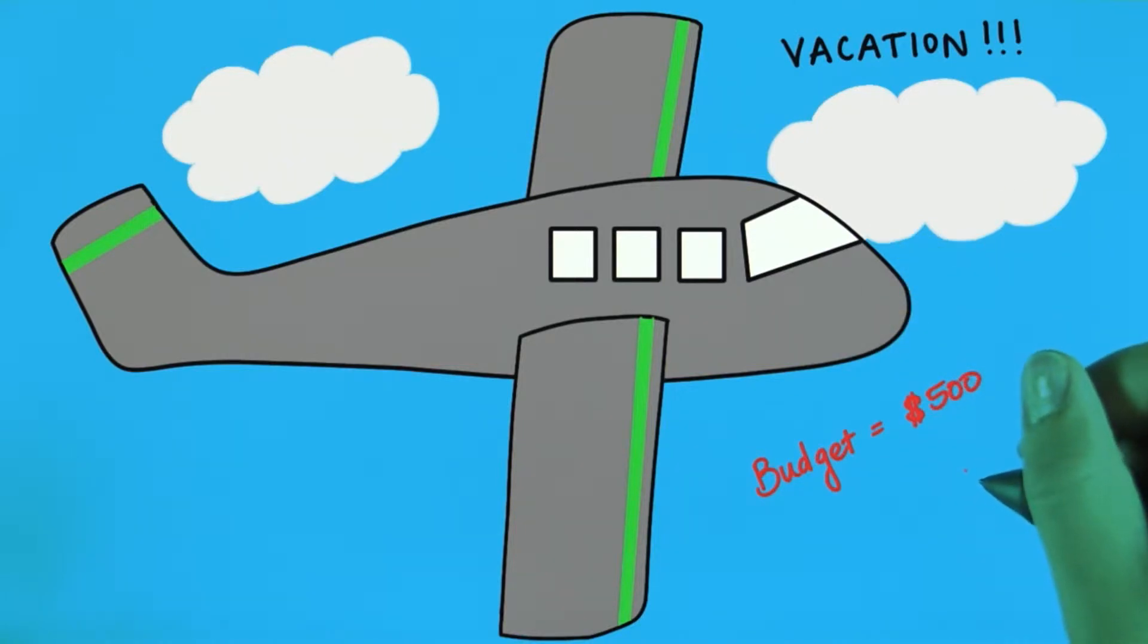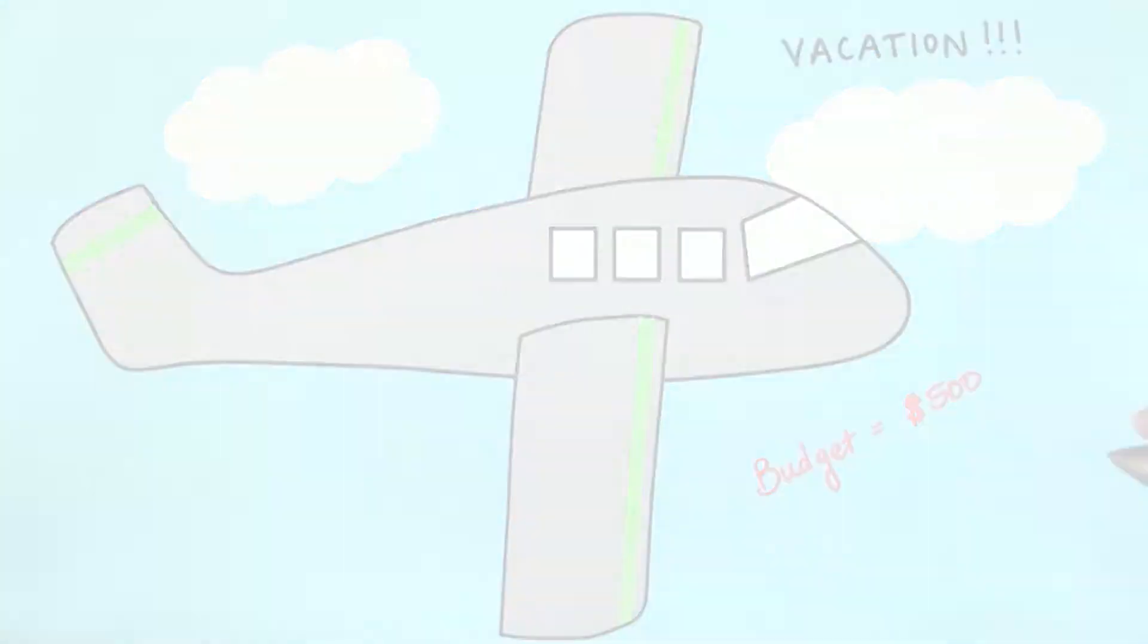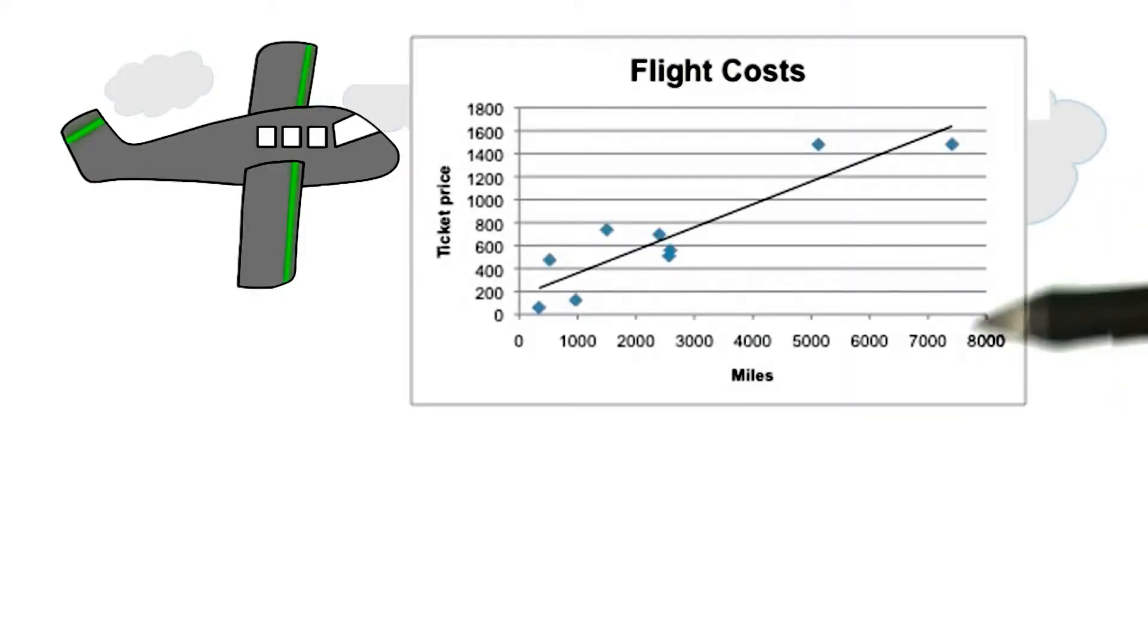You decide to analyze some flights and plotted the number of miles they traveled and the cost of that plane ticket. Here's a scatter plot showing the nine flights you looked up. Here's the line of best fit.